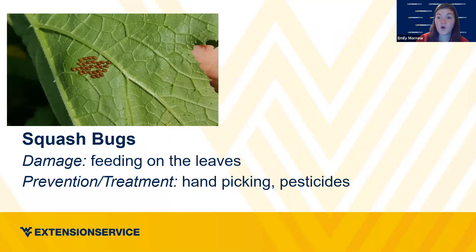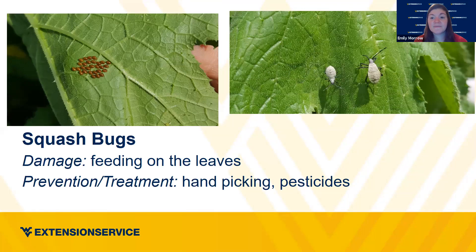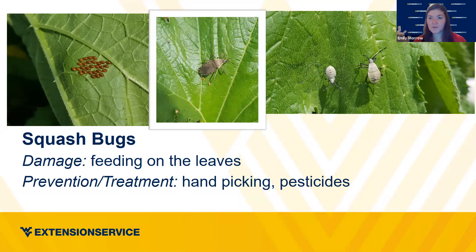Squash bugs are a good example showing different life cycles — I took all these pictures on the same day. They feed on the leaves; handpicking and pesticides are options. In the community gardens in Ranson, they were just handpicking — the population wasn't bad enough to justify more. You could see the egg stage, the next nymph stage, and the adult all present at the same time. So even within one life cycle, just because we're past a certain time period doesn't mean you won't still see eggs, nymphs, and adults simultaneously — it's just because of the flow of the environment at the time.